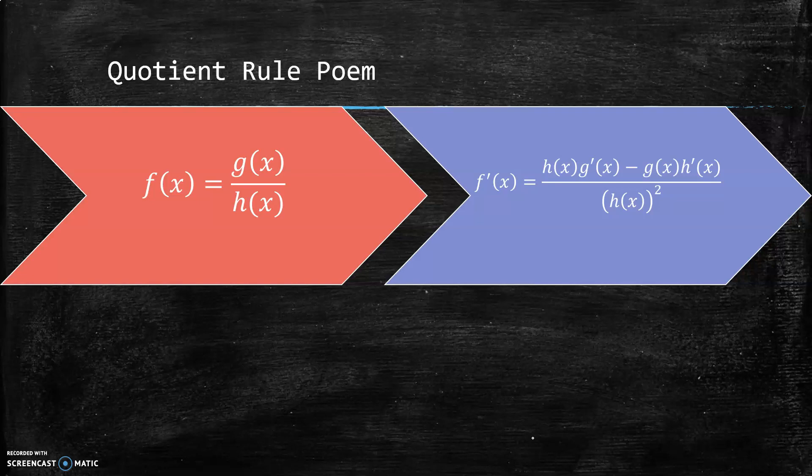This is the quotient rule: if your function is a quotient of two functions, then the derivative is this big ugly mess. There's a poem that helps you remember the quotient rule, and to be honest I never use the quotient rule without the poem.